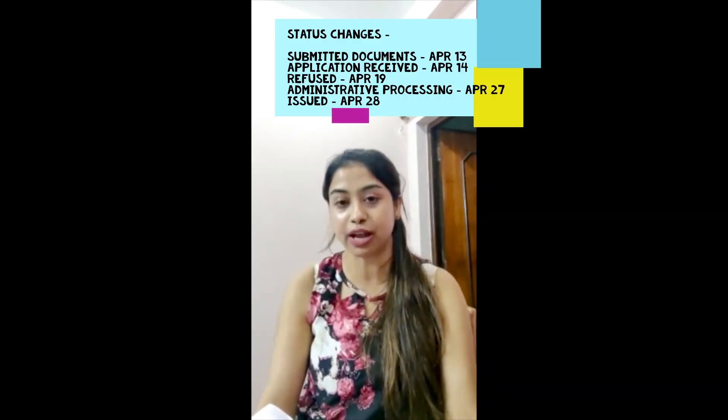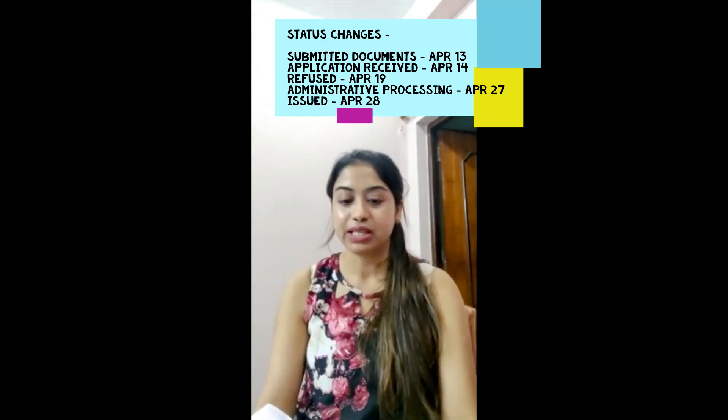In my case, my status was refused on 19th April and it stayed refused for the next 7 to 10 business days. Then my status changed to 'administrative processing' on 27th April. The period between 19th April and 27th April was a very stressful one for me, but after I saw the status change to administrative processing there was a ray of hope that something positive might happen. Then on 30th April, my status changed to 'issued,' meaning my F1 visa application had been approved. I received my passport on April 30th with my F1 visa stamped in it.